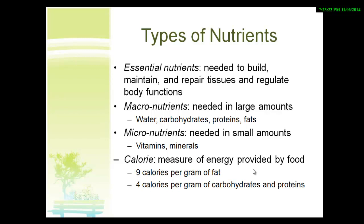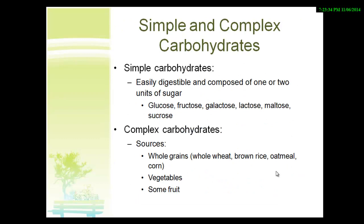Let's talk a little bit more about carbohydrates and focus on sugars and simple sugars. So now we're talking about simple versus complex carbohydrates. Your simple carbohydrates include glucose, fructose, galactose, lactose, maltose, and sucrose. Sucrose is the simple sugar you'd get in a candy bar — that processed sugar you buy at a store. Fructose you might see in orange juice or some fruit drink.